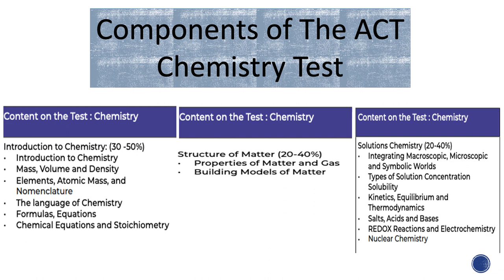The structure of matter, which is worth 20 to 40% of the ACT chemistry test, assesses properties of matter and gases and building models of matter. Solutions in chemistry, which is worth 20 to 40% of the overall grade, assesses integrating macroscopic, microscopic, and symbolic worlds, types of solutions, concentration, solubility, kinetics, equilibrium, and thermodynamics.